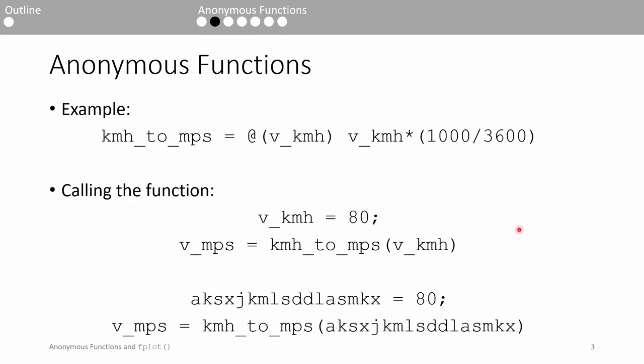Here's an example of constructing an anonymous function. We'll do more intensive examples in the second video, but here's a quick one for illustrative purposes. This anonymous function converts a speed from kilometers per hour to meters per second. It's called kmh to mps. It accepts one argument, v kmh, and it's multiplied by the appropriate conversion factor.